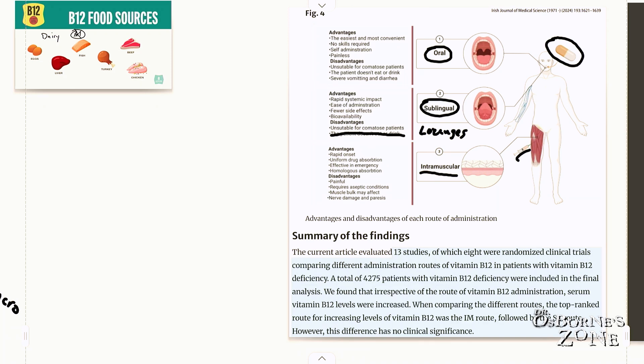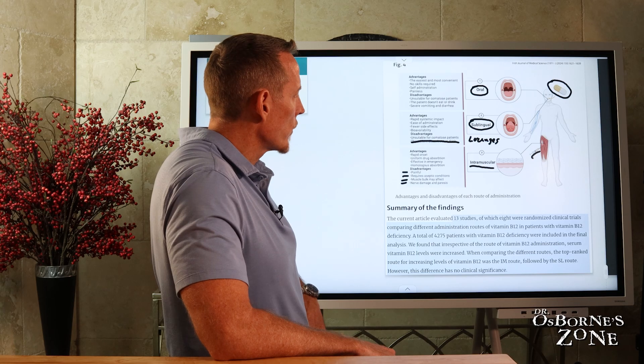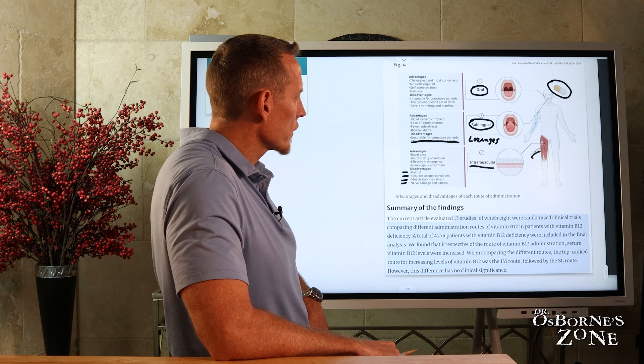Yet disadvantages are if you fear needles, it's painful, requires an aseptic condition, meaning if that needle gets contaminated, you could infect yourself. Muscle bulk may affect the administration. So if you've got a lot of muscle tissue, if you're really well muscled, it can be harder for that intramuscular injection to disperse equally, and that injection can damage nerves and create paresis or numbness and tingling as it damages the nerves. So these are just some of the risks involved with these intramuscular injections.